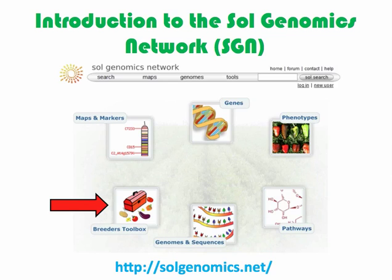SGN houses numerous databases with a wealth of Solanaceae-related information, from molecular markers and genetic and physical maps to genes, metabolic pathways, and entire genomes. Although SGN was designed with basic researchers in mind, there are tools on SGN that are relevant to breeders. These are housed in the Breeders Toolbox.